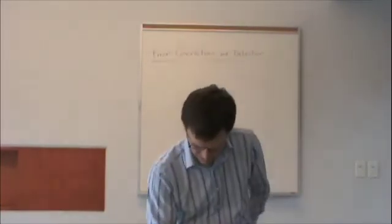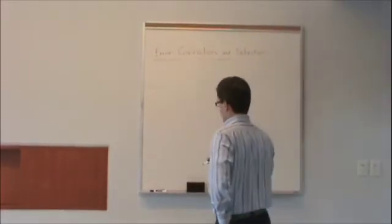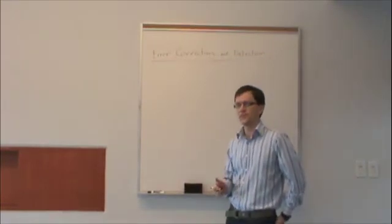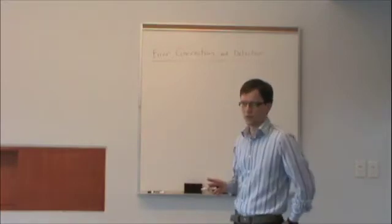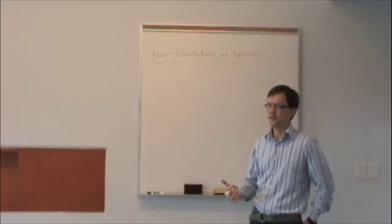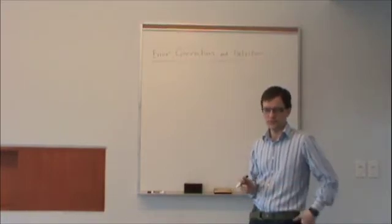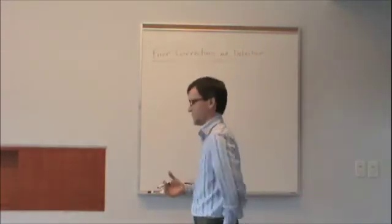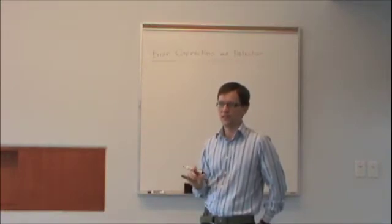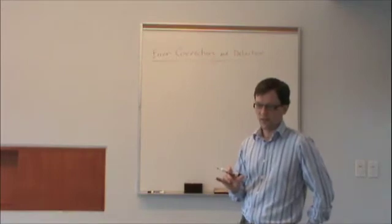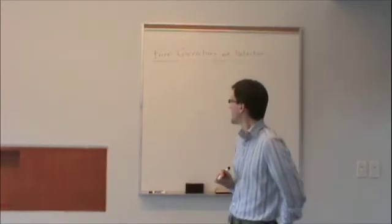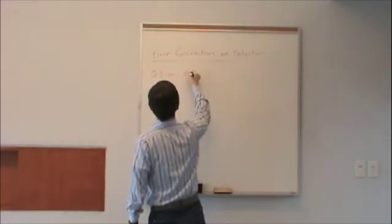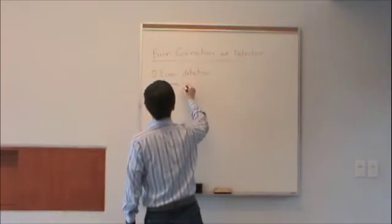Let's start by motivating this with an example. We saw last time the very simple example of how we are able to correct errors in the English language. It's because not every sequence of letters is a valid word, so we're at least able to detect when an error has occurred, and often we're able to correct it because words are sufficiently far apart somehow. Today we're going to start with an example and then define that measure of distance, which is called Hamming distance.